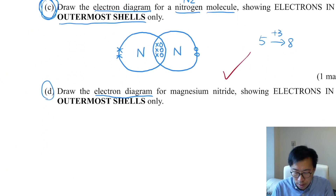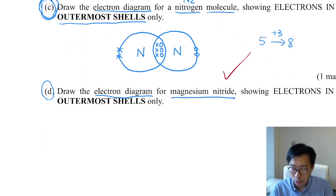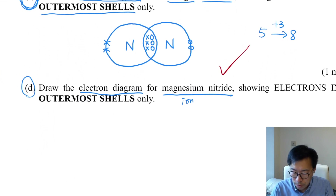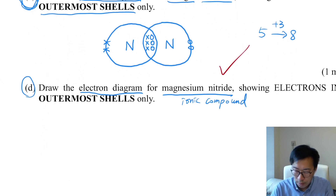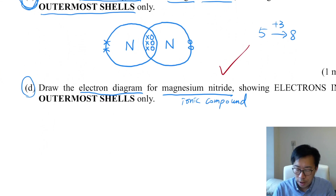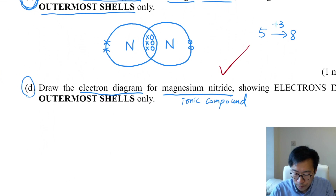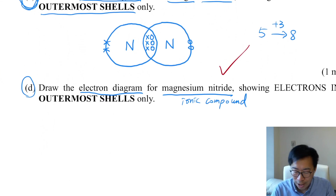Finally, let's talk about part D. This time you are asked to draw the electron diagram of magnesium nitride. Make sure you know that magnesium nitride is an ionic compound. The electrons are not going to be shared this time — instead, there should be a transfer of electrons. After the transfer of electrons, each Mg atom and N atom will become ions.